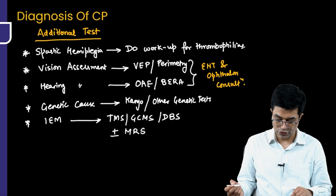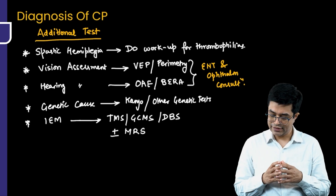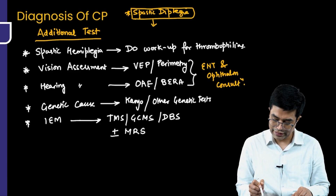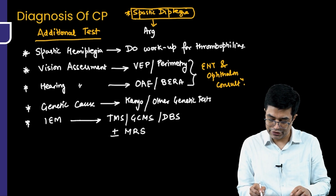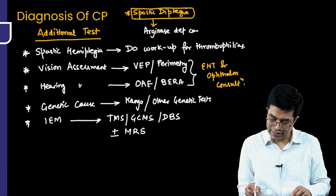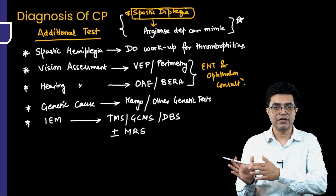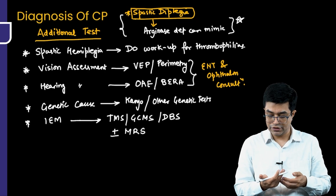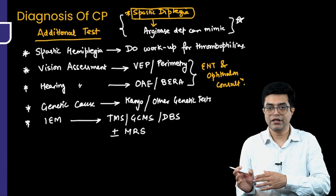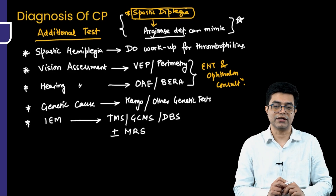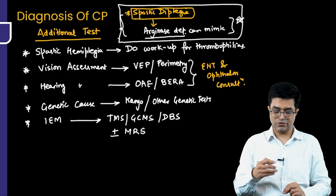Nelson notes that spastic diplegia-like presentation can be seen in patients with a urea cycle defect called arginase deficiency. So arginase deficiency can mimic spastic diplegia, and this should always be kept at the back of your mind. For entrance exams, if a child presents with spastic diplegia but MRI findings are relatively preserved and an inborn error of metabolism is suspected, the likely answer is a urea cycle defect — specifically arginase deficiency. Please add this to your notes as an entrance exam point.